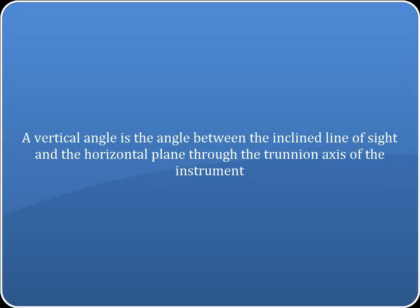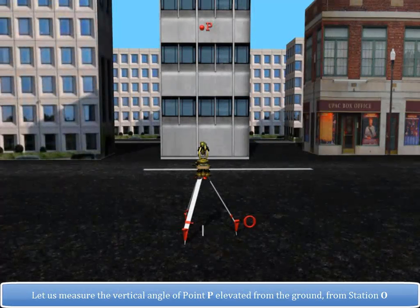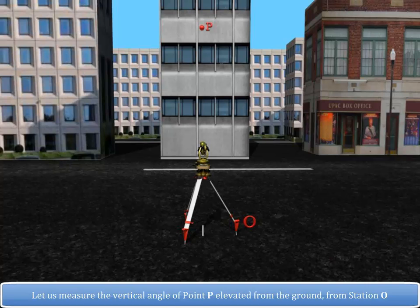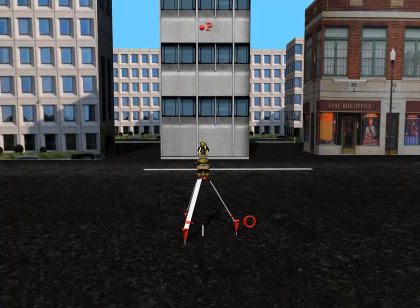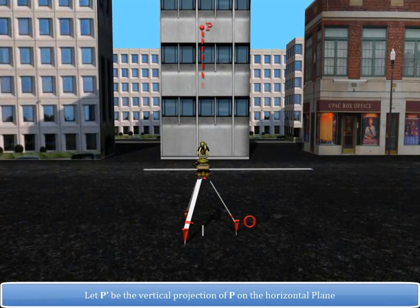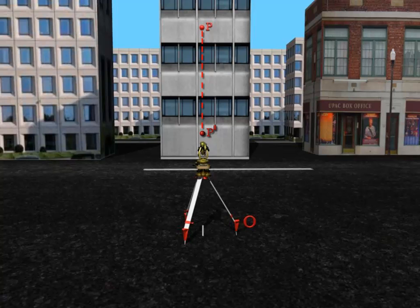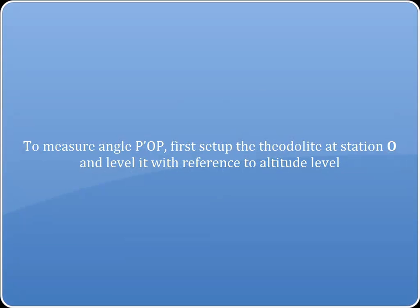A vertical angle is the angle between the inclined line of sight and the horizontal plane to the trunnion axis of the instrument. Let us measure the vertical angle of point P elevated from the ground from station O. Let P' be the vertical projection of P on the horizontal plane.